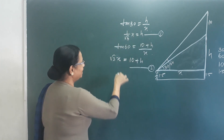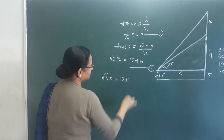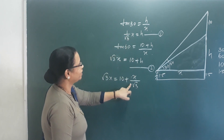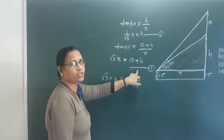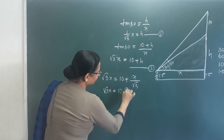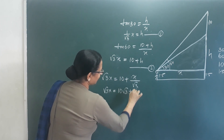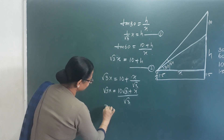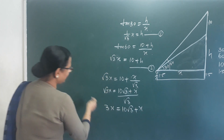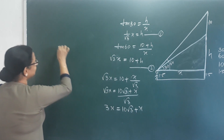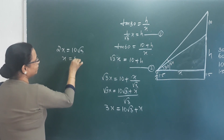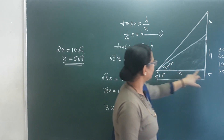Substituting Equation 1 into Equation 2: root 3X equals 10 plus H, and H equals X by root 3. So root 3X equals 10 root 3 plus X by root 3. Cross multiplying: 3X equals 10 root 3 plus X. So 3X minus X equals 10 root 3, meaning 2X equals 10 root 3, therefore X equals 5 root 3.